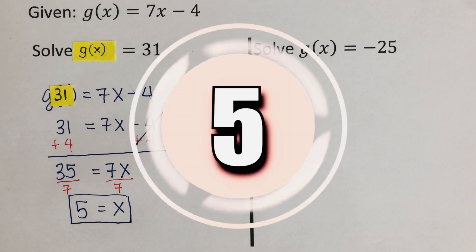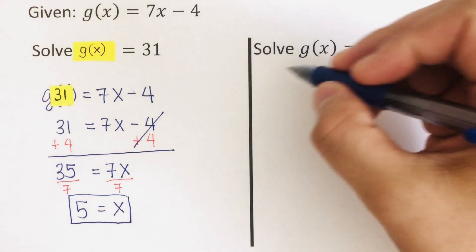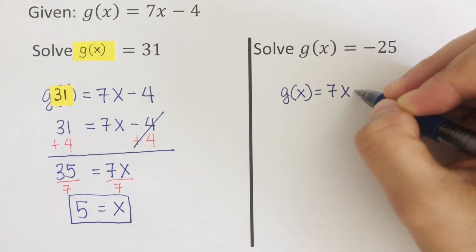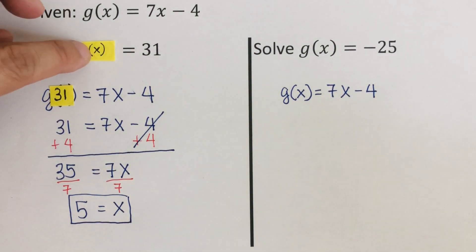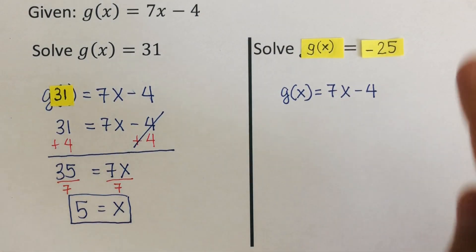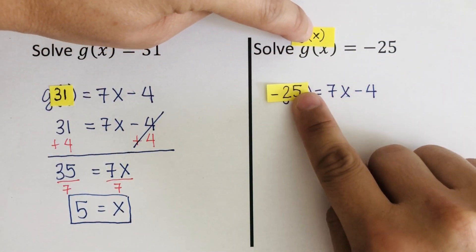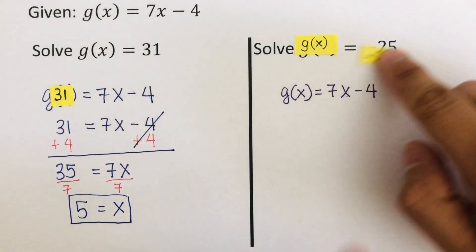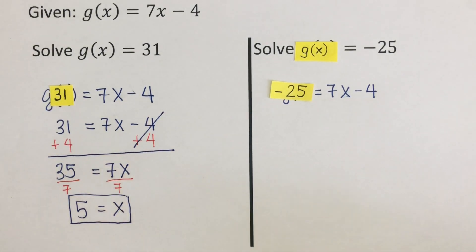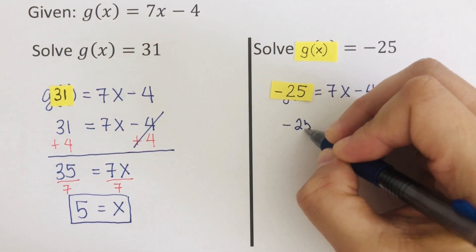Okay, let's go over the next problem. The function is g(x) = 7x − 4, and in this problem we have g(x) = −25. Since these two are equal to each other, we can substitute −25 in place of g(x), giving us −25 = 7x − 4.